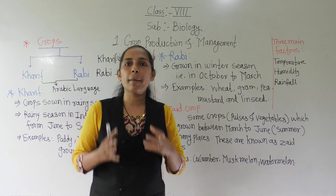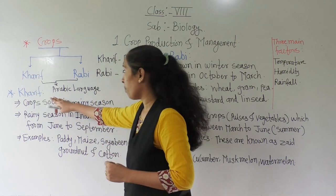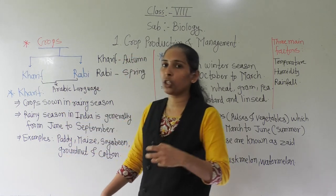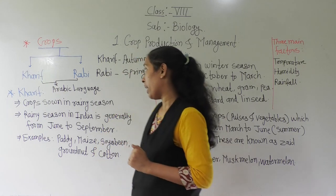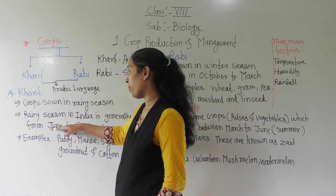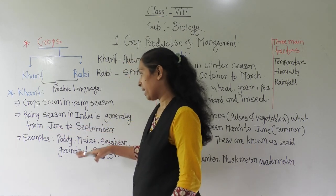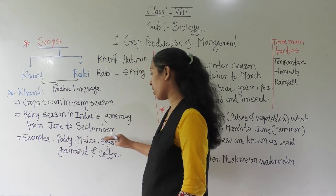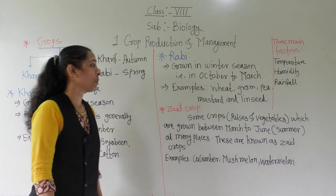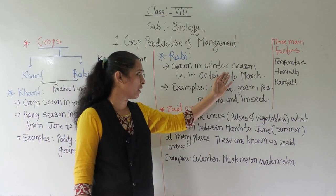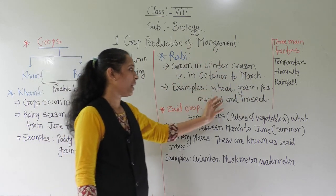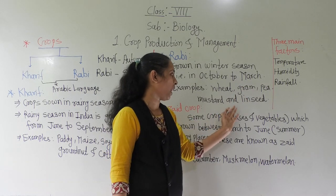So up till now we have discussed the two main types of crops: kharif crops and rabi crops. Kharif crops are totally dependent on rainwater — they are grown in the rainy season from June to September. Examples are paddy, maize, soyabean, groundnut, and cotton. Rabi crops are grown in winter season, from October to March. Examples are wheat, gram, pea, and mustard.